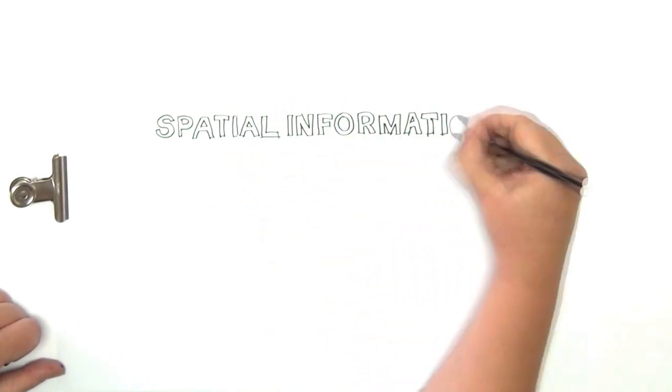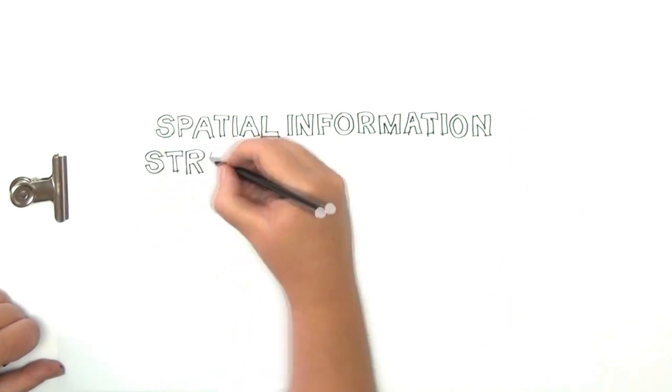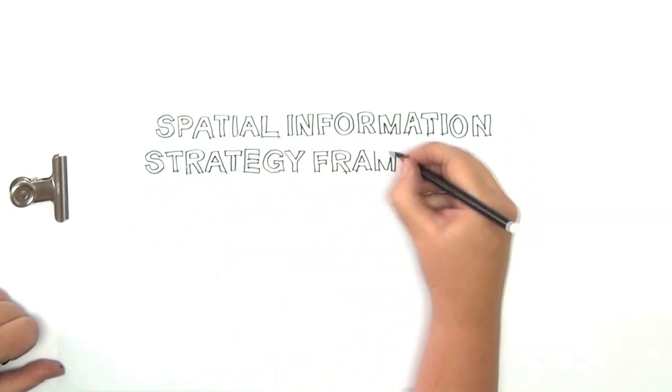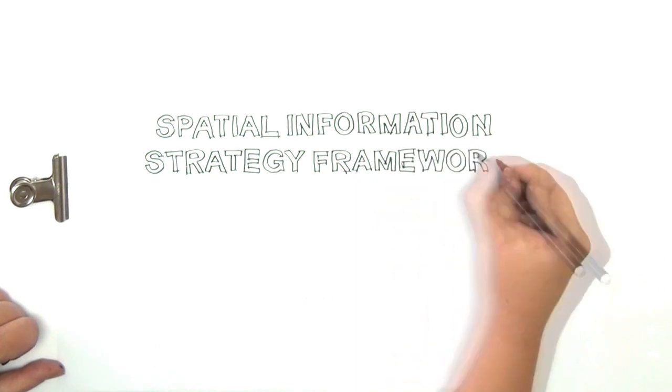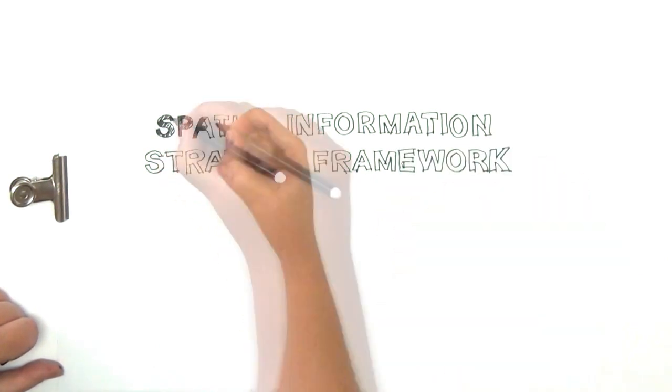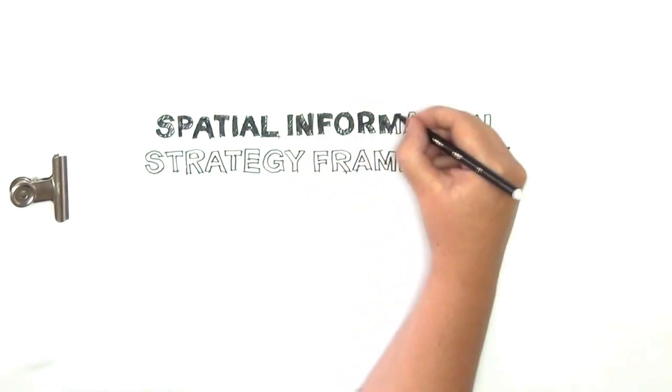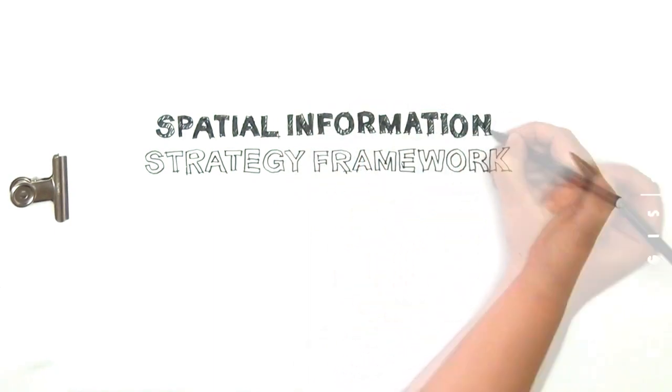Over the years, we have developed a variety of processes and methodologies that allow the successful application of spatial information, that means maps or GIS, and related technologies into big organizations. This is the Spatial Information Strategy Framework and we believe it is part of the plan to address the nine challenges.